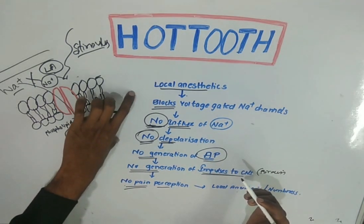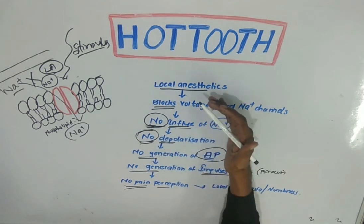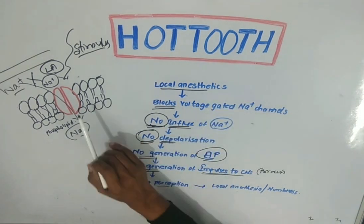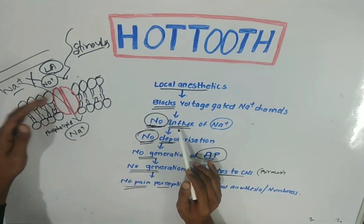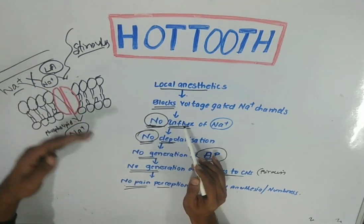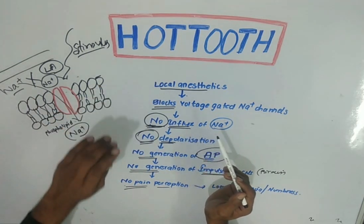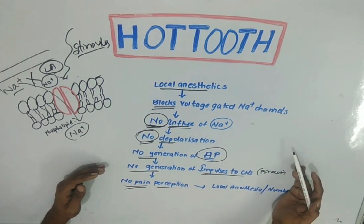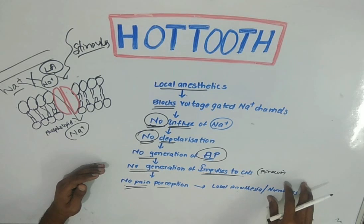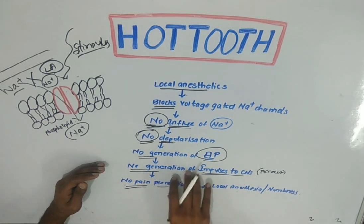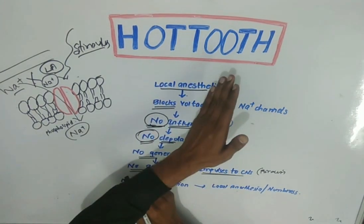This is the mechanism of how local anesthetic works. When a local anesthetic solution acts on sodium-gated channels, it blocks them such that there is no influx of sodium ions, preventing depolarization, thereby no generation of action potential, no impulses to the central nervous system, and local anesthetic effect — numbness — is achieved with no perception of pain. Now I am going to explain the actual mechanism of hot tooth.